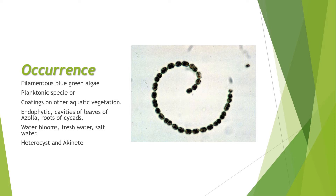Next is the occurrence of Anabaena. It is a filamentous blue-green algae because it exists in the form of a filament. It is a planktonic species, meaning it can float over the surface of the water — that is why it is known as a planktonic species.